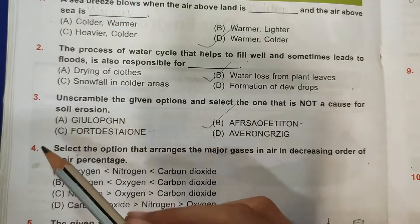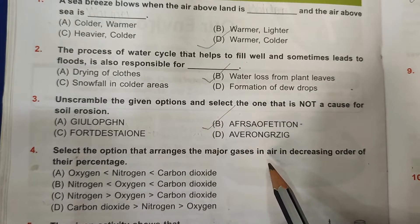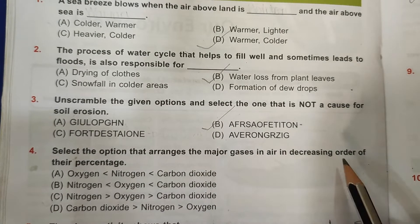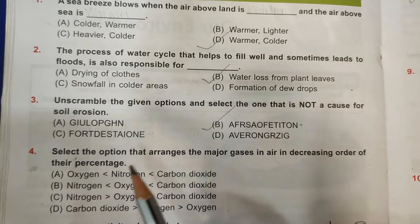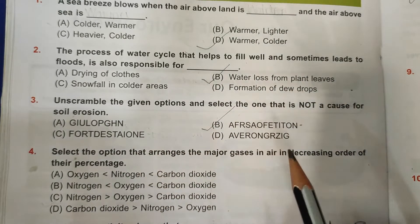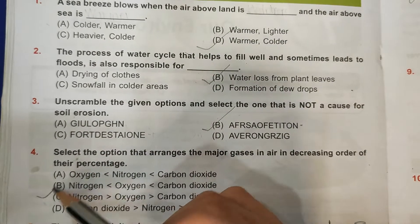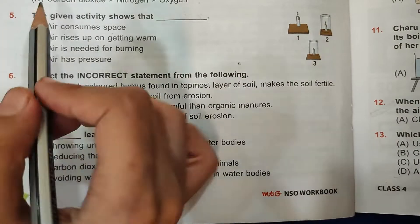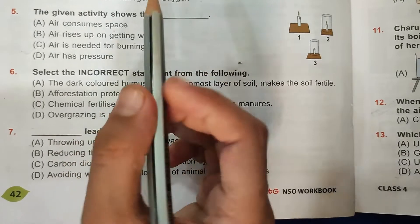So deforestation and overgrazing are responsible for soil erosion, and afforestation is not responsible for soil erosion, means B is the correct answer. Then fourth question: Select the option that arranges the major gases in air in decreasing order of their percentage. So first is nitrogen, then oxygen, and then carbon dioxide, so B is the correct answer.